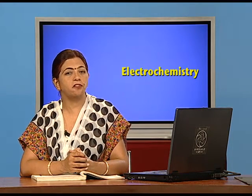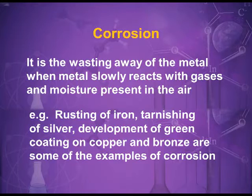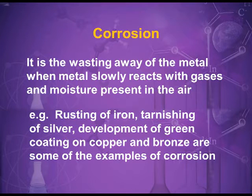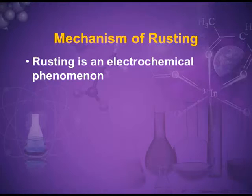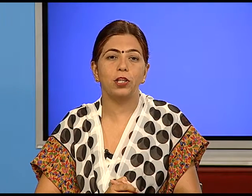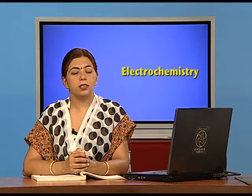Corrosion is defined as the wasting away of a metal when it reacts with atmospheric gases, forming an oxide layer or salts on the metal surface. Rusting is a form of corrosion, but every corrosion is not rusting. It is an electrochemical phenomenon.